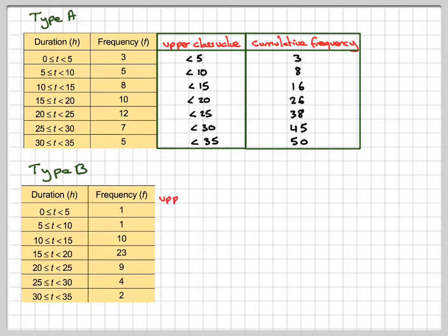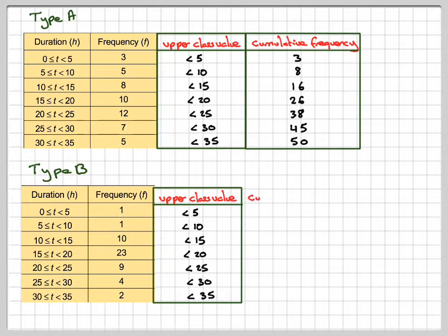Type B, doing exactly the same thing, the same upper class values. And then adding up the frequencies, which we've called the cumulative frequency: 1, 2, so that's 1 plus 1, 1 plus 1 plus 10 is 12, plus 23 is 35, 44, 48, 50.